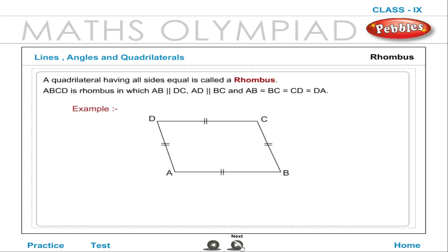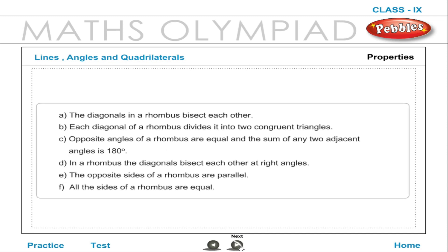Rhombus: A quadrilateral having all sides equal is called a rhombus. ABCD is a rhombus in which AB is parallel to DC, AD is parallel to BC, and AB = BC = CD = DA. Properties: The diagonals of a rhombus bisect each other. Each diagonal divides it into two congruent triangles. Opposite angles are equal and the sum of any two adjacent angles is 180 degrees. The diagonals bisect each other at right angles. The opposite sides are parallel and all sides are equal.